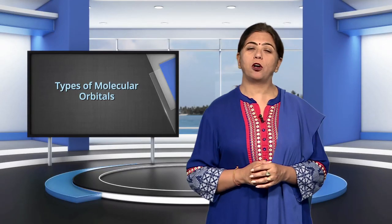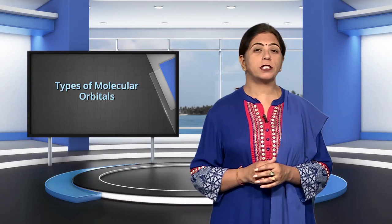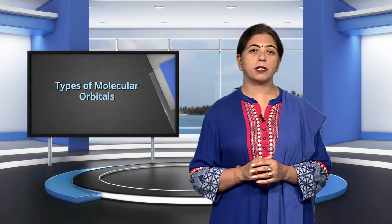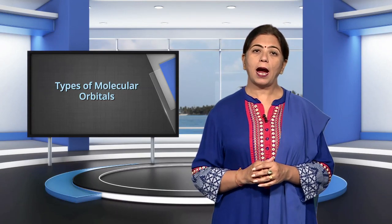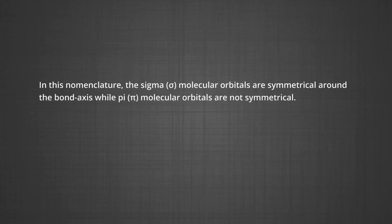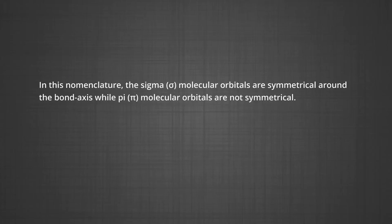Types of molecular orbitals. The molecular orbitals of diatomic molecules are designated as sigma (σ), pi (π) and delta (δ), etc. In this nomenclature, sigma molecular orbitals are symmetrical around the bond axis, while pi molecular orbitals are not symmetrical. For example, the linear combination of 1s orbitals centred on two nuclei produces two molecular orbitals which are symmetrical around the bond axis — of the sigma type, designated as σ1s and σ*1s.